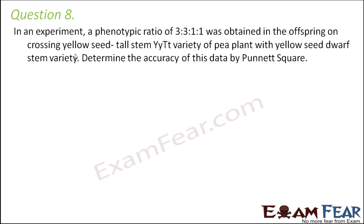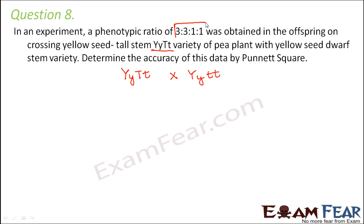Question number 8. In an experiment a phenotypic ratio of 3:3:1:1 was obtained in the offspring on crossing a yellow seed tall stem (YyTt) variety of pea plant with a yellow seed dwarf stem (Yytt) variety. Determine the accuracy of this data by Punnett square. So the cross being done is YyTt × Yytt. We have to find out if we actually get a phenotypic ratio of 3:3:1:1. Before using the Punnett square we need to find the gametes.